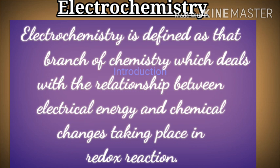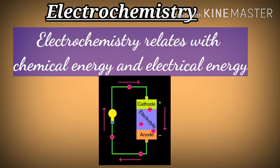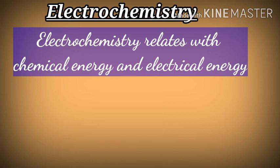As we have learned in the previous class, reactions which involve both oxidation and reduction are called redox reactions. Electrochemistry is defined as the branch of chemistry which deals with the relationship between electrical energy and chemical changes taking place in redox reactions. It also deals with chemical energy and electrical energy.